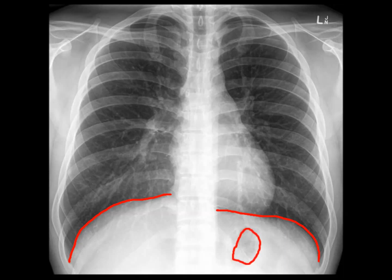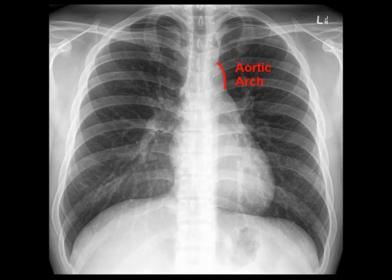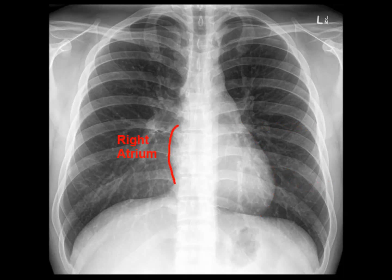The borders of the diaphragm are outlined here. Notice that the right hemidiaphragm is higher than the left — this is normal and is due to the liver lying underneath. On the left side, you might see a bubble under the diaphragm; this is a gastric bubble in the stomach and is a normal finding. Next, we will look at the borders of the heart and major blood vessels, going clockwise from top to bottom: the subclavian artery, the aortic arch, the pulmonary artery, a small bit of the left atrium, the left ventricle, the right atrium, the superior vena cava, and the ascending aorta.